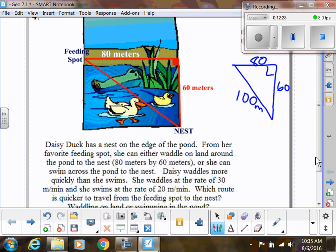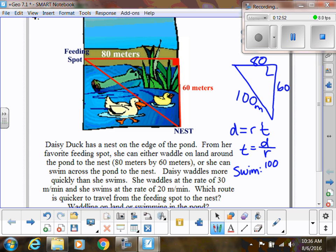Well, we need to then use her rate. If we do, remember, distance is equal to your rate times your time. Well, we're trying to figure out how long will it take. So if I want to solve for time, I want to take her distance and divide by the rate. So for swimming, we know her distance is 100 meters, and she swims at a rate of 20 meters per minute. So if we do 100 divided by 20, we just get 5. So what does that mean? That means it's going to take her 5 minutes to swim.